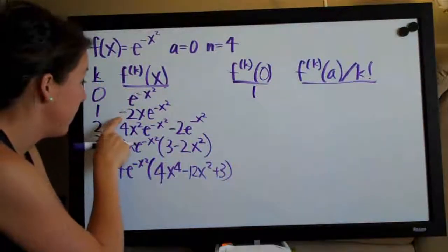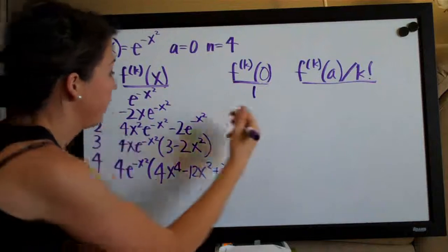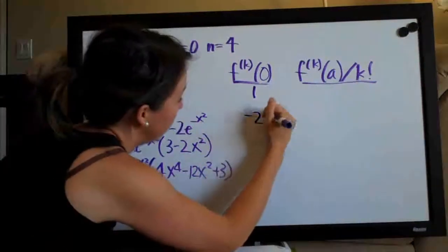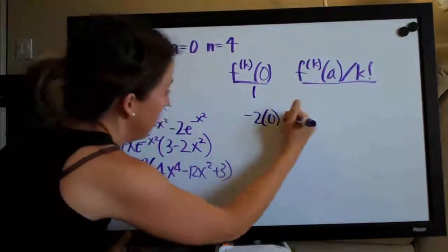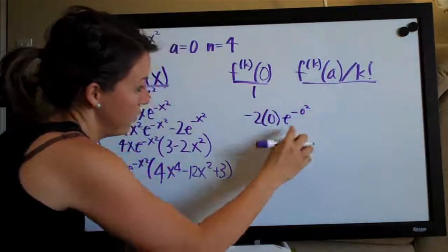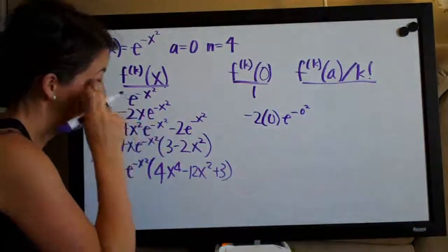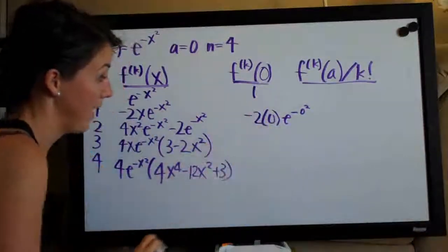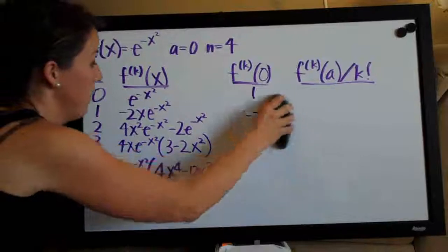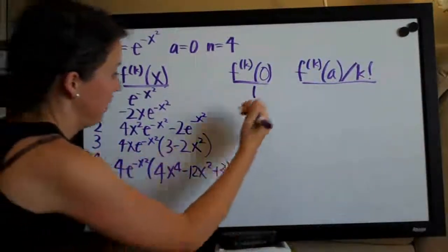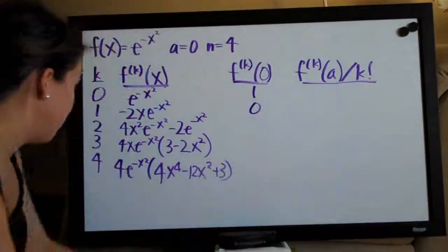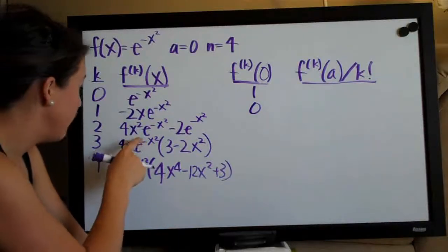Now, we plug in zero to the second one here. We'll have negative two times zero e to the negative zero squared, right? So, you can see that since we have zero here for this x, it's going to cancel everything out and make the whole thing zero. So, the second row here, we're looking at zero.